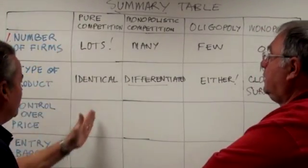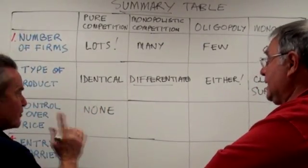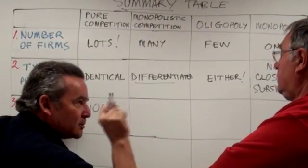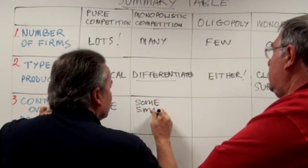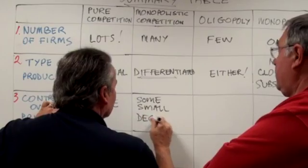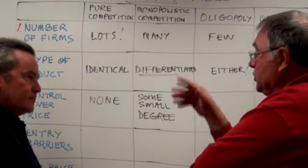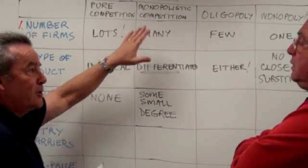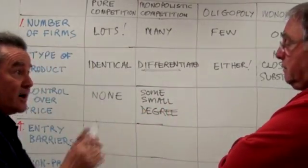For control over price: pure competition has none — firms are price takers. Monopolistic competition has some small degree of control, because of clever differentiation. If you've got organic apples, you can play on that differentiation and charge a little bit extra. That's why we use the adjective monopolistic — even though it's a competitive structure, they enjoy a small degree of market power.